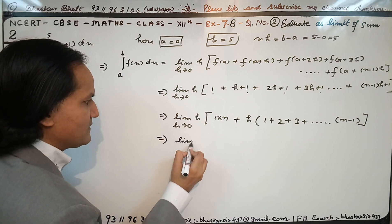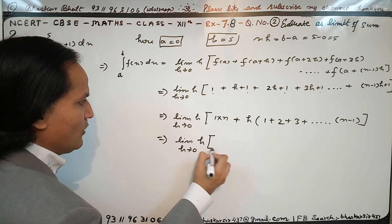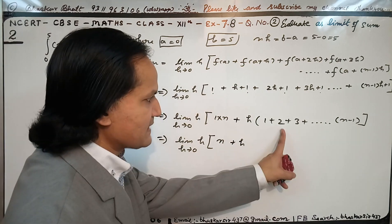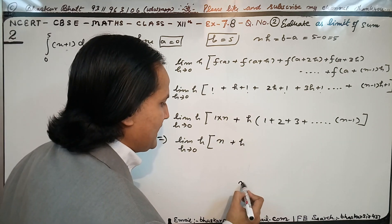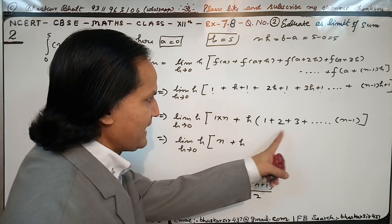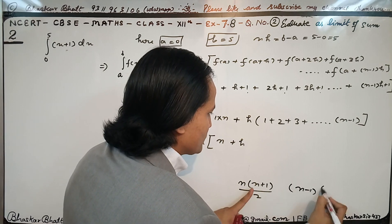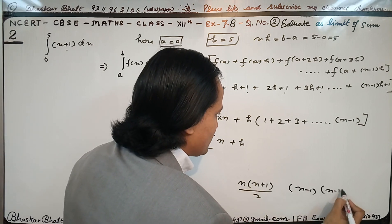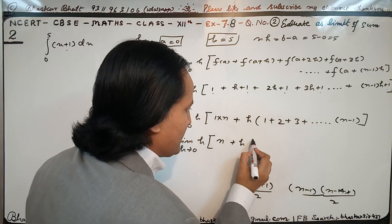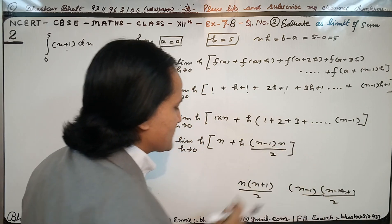h tends to 0 पर, h के साथ n·h होगा। Sum का formula: 1 + 2 + ... + (n−1) = n(n−1)/2 — यानि n−1 terms का sum, जहाँ n की जगह n−1 है, तो (n−1)(n−1+1)/2 = n(n−1)/2। तो expression बना: n·h + h × n(n−1)/2।